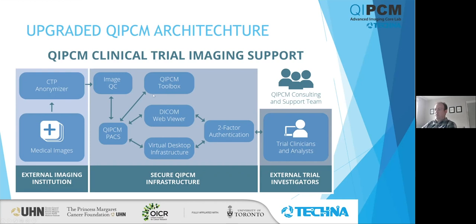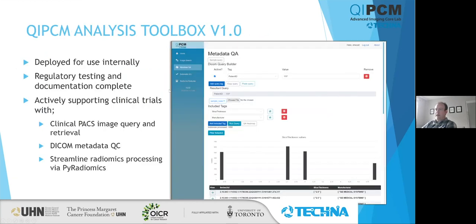The other change is that our feature extraction became the QIPCM Toolbox. The QIPCM Toolbox is a set of tools and pipelines designed to facilitate QA and analysis for some of our trials as they get larger and larger. The first version of this toolbox was released last fall and we're working on version 1.1. These tools at the moment are available just locally within QIPCM, but our hope is to soon make this available for external users.